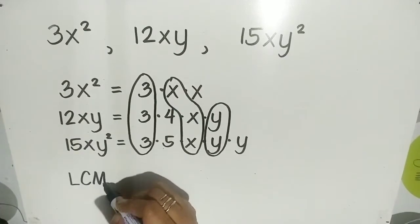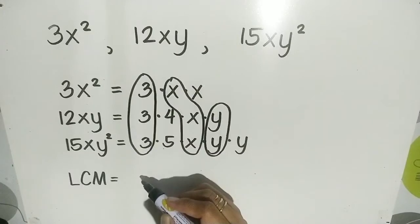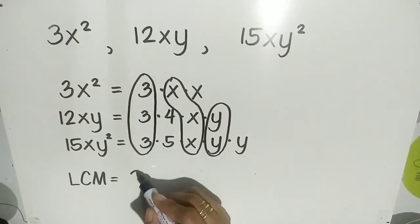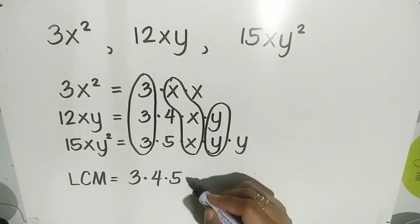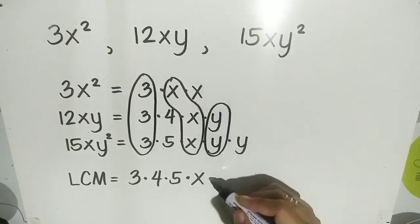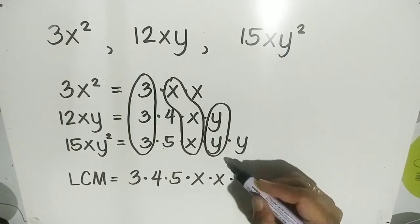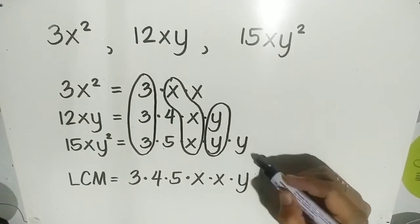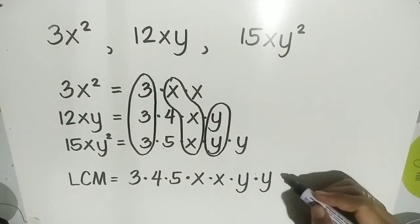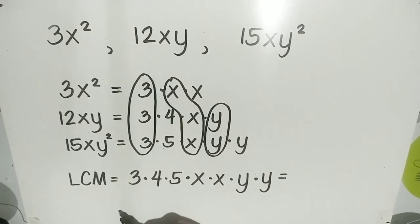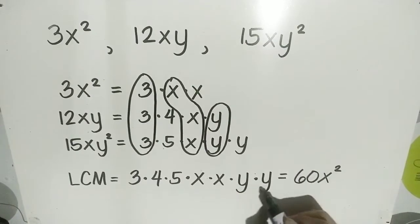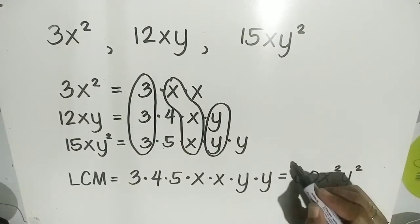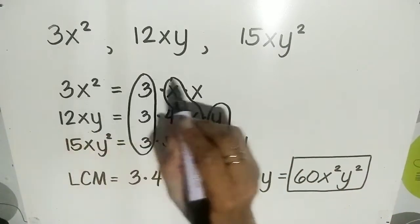Let's copy the common factors and the non-common factors. For the numerical coefficients, we have 3 times 4 times 5. For the variables, we have common factor x, non-common factor x, common factor y, and non-common factor y. Multiplying: 3 times 4 is 12, times 5 is 60; x times x is x squared; y times y is y squared. So, 60x squared y squared is the LCM of the three monomials.